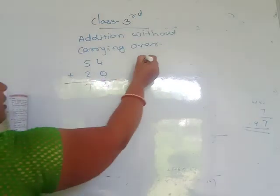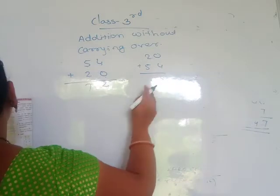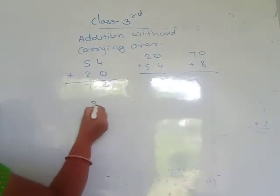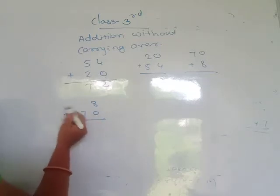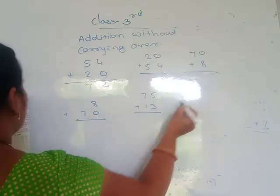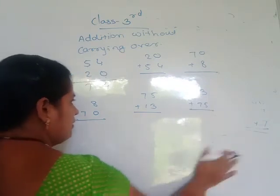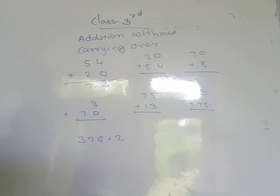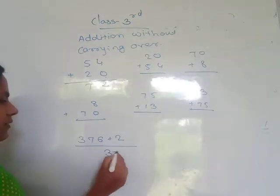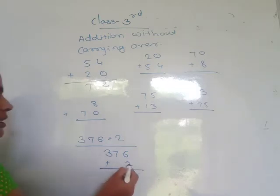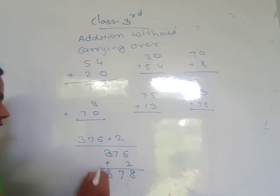More examples: 20 plus 54, then 70 plus 8, and 8 plus 70. For 75 plus 30, and 30 plus 70. Here only the unit place number 2 is given. Unit place below unit place: 6 plus 2 equals 8, tens digit 7, hundreds digit 3 — giving 378.